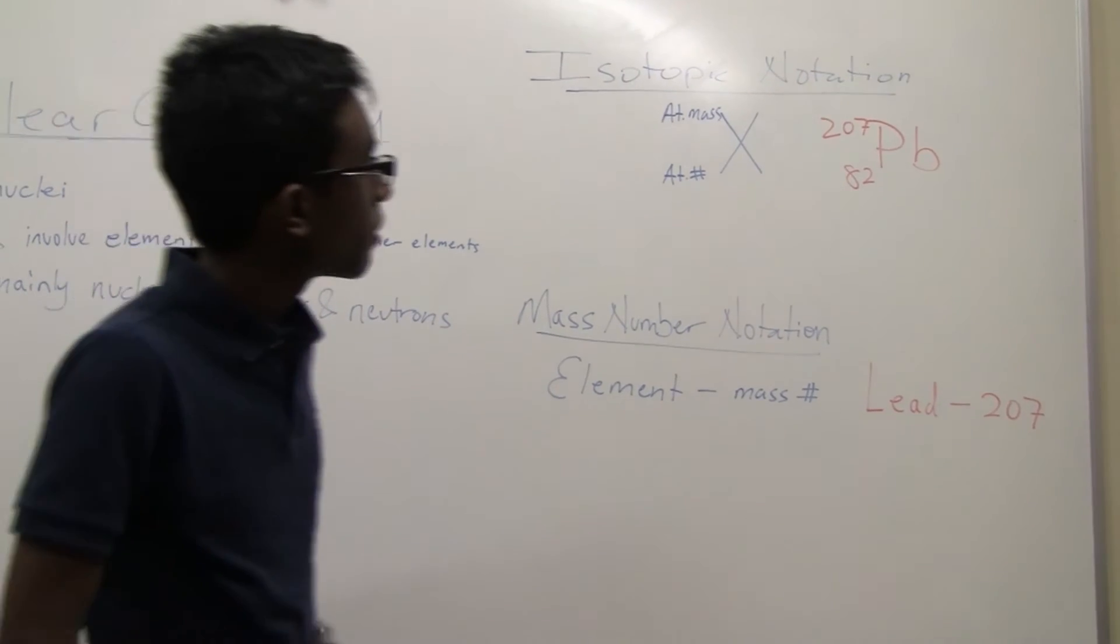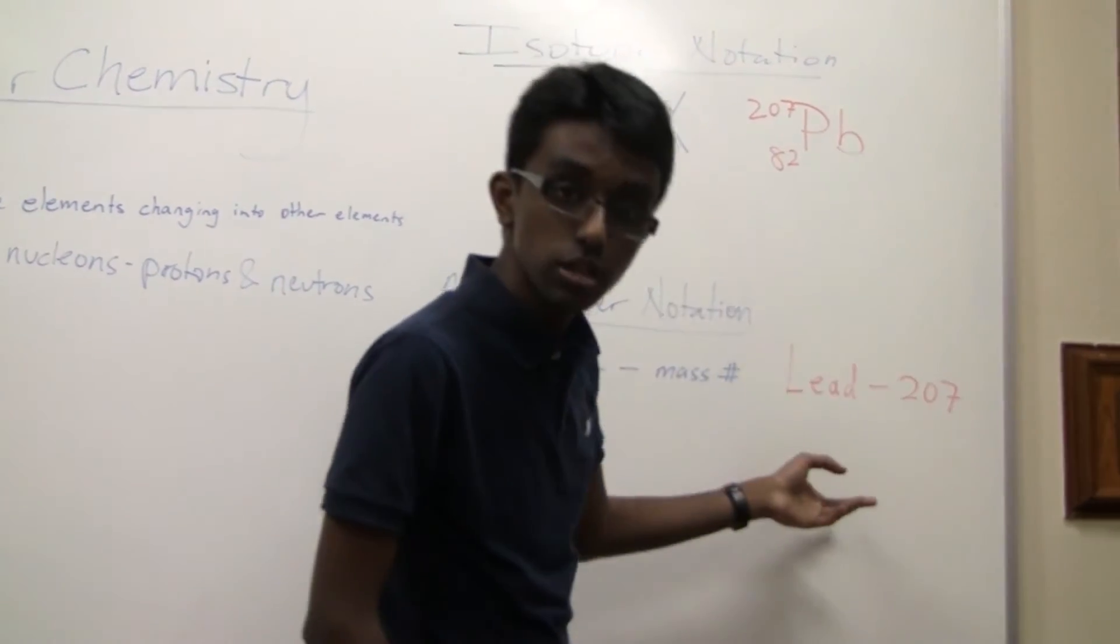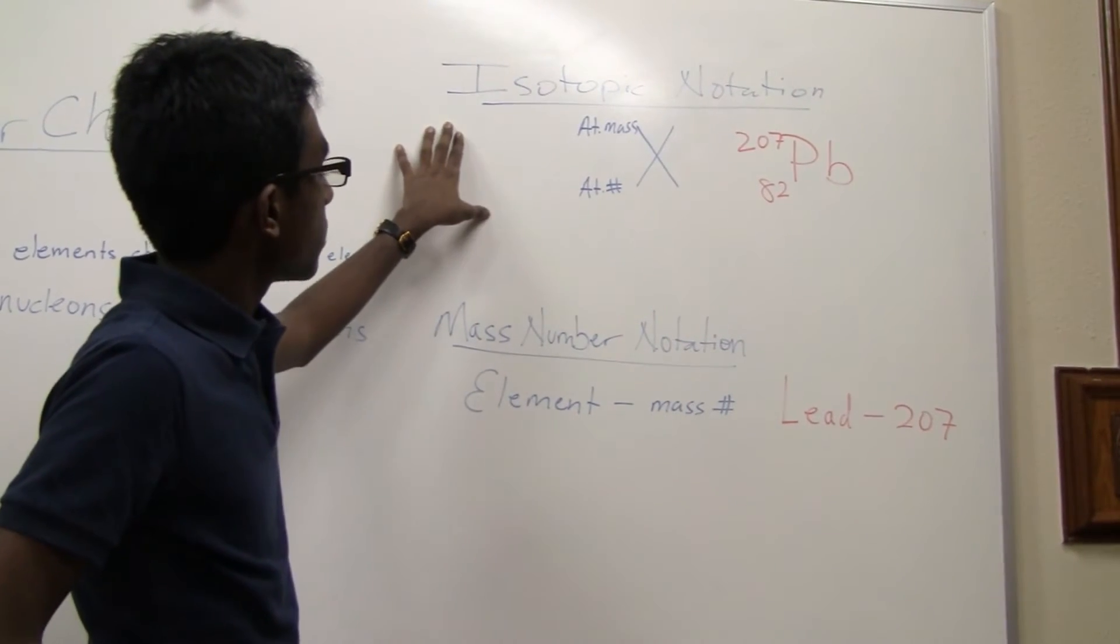So for example, here I have lead-207. There's two ways you can write lead-207. This is called the isotopic notation. In the isotopic notation, you put the symbol.